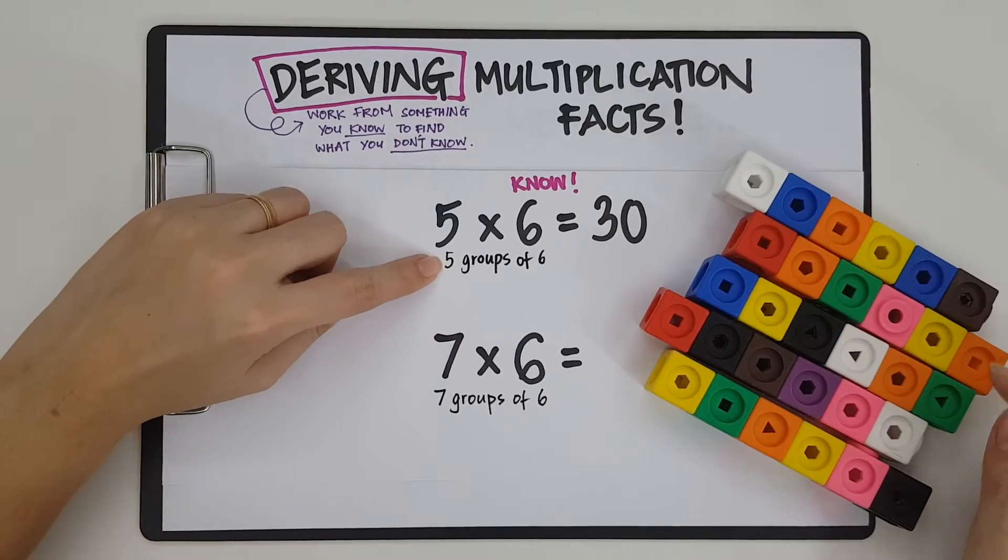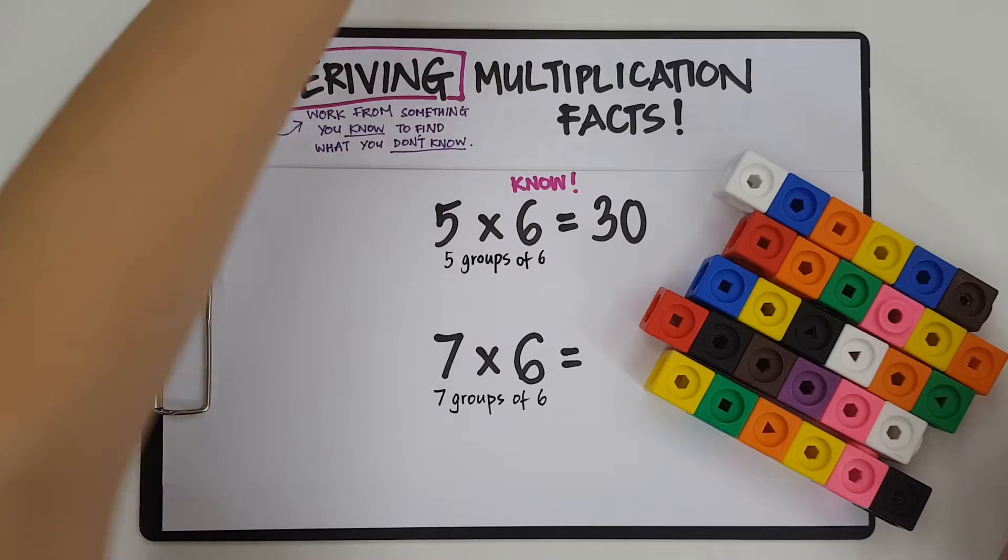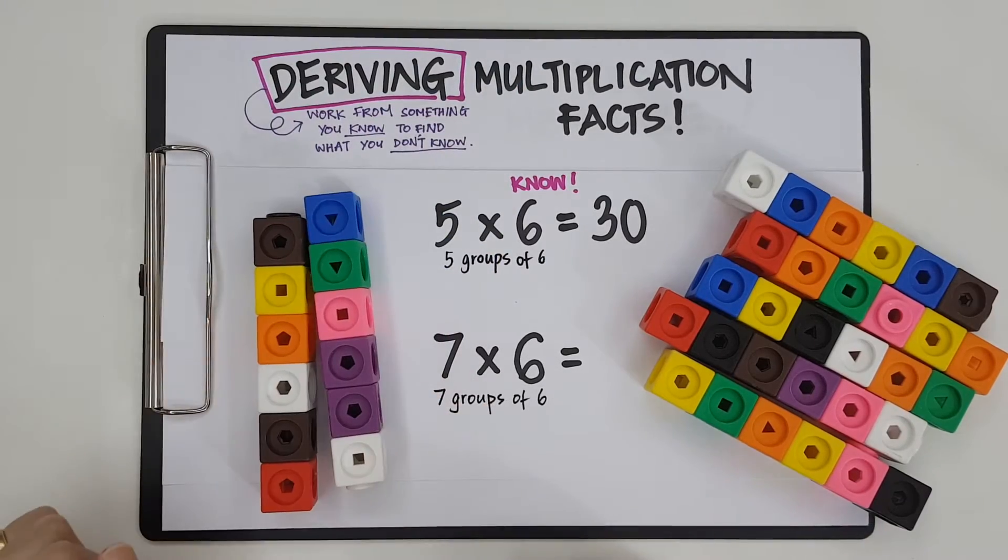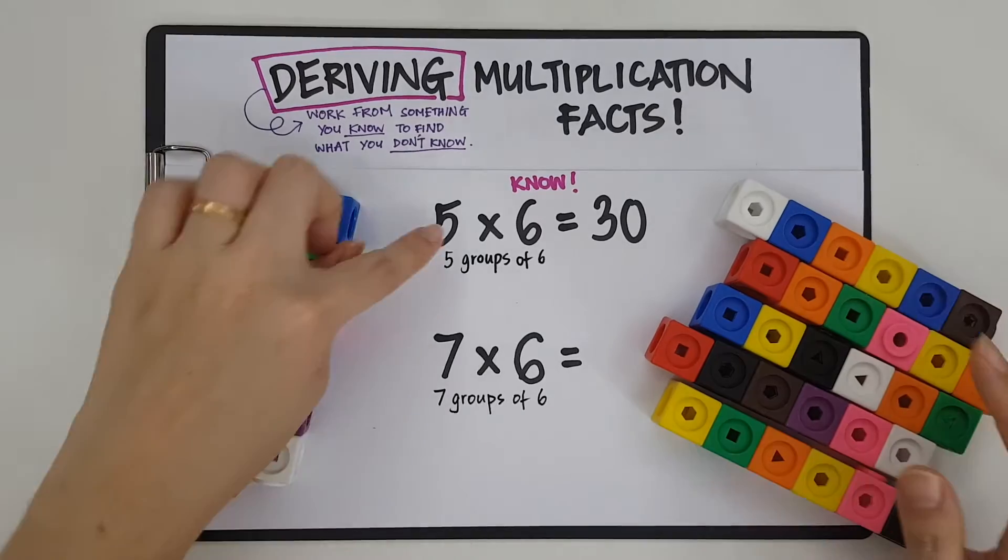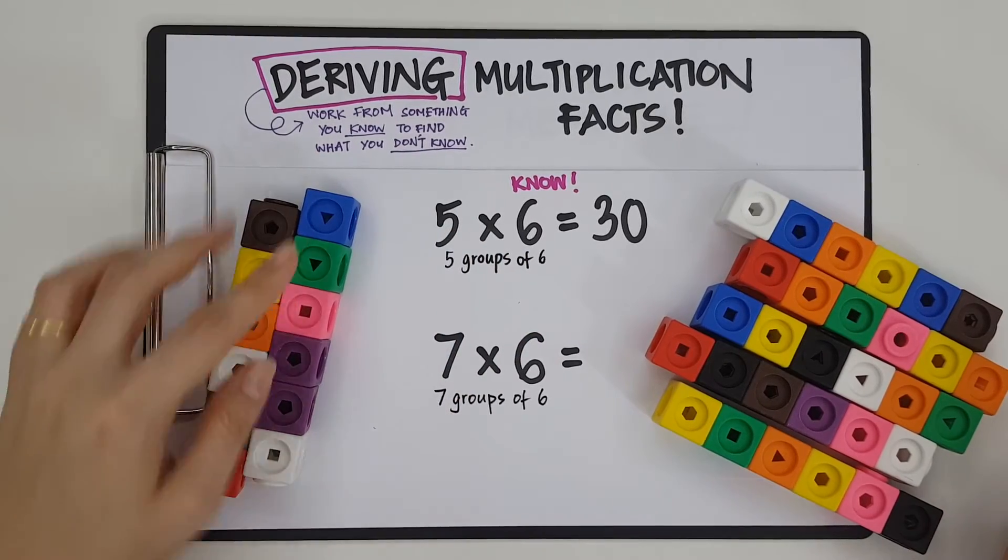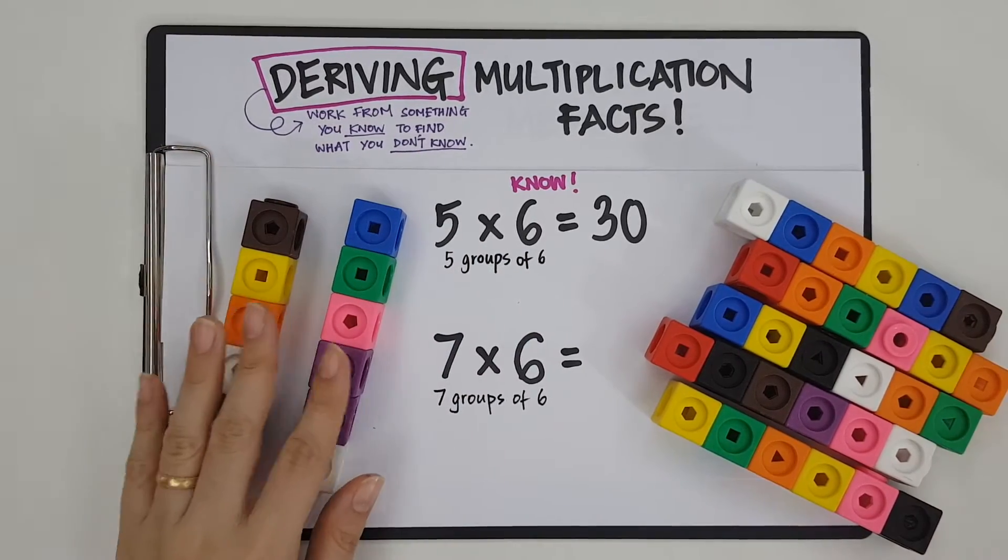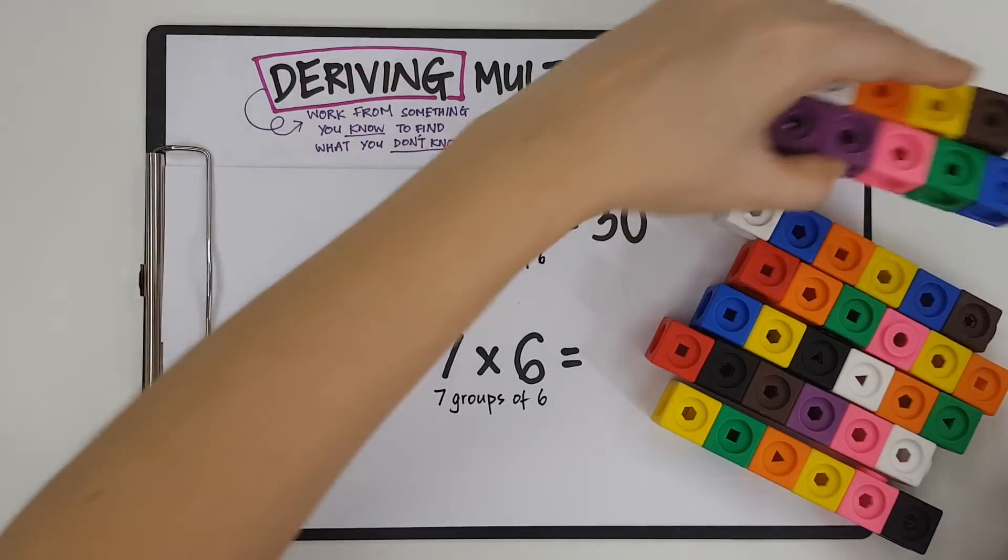Now, if I want to go from 5 groups to 7 groups of 6, I need another 2 groups of 6. Right? Okay? If I have 5 groups of 6 and I want to go to 7, I need to add 2 more groups. Okay? So let me write that down.